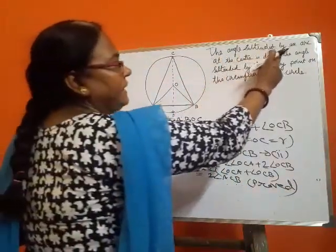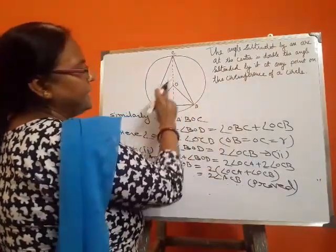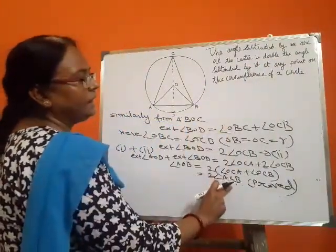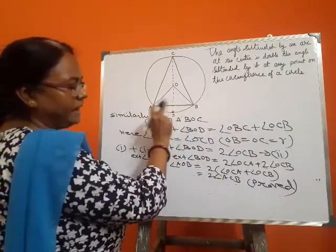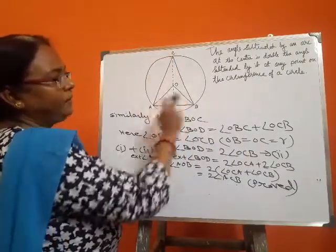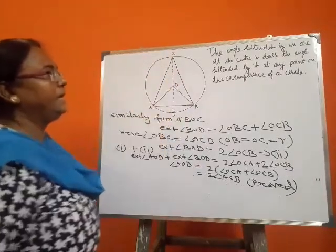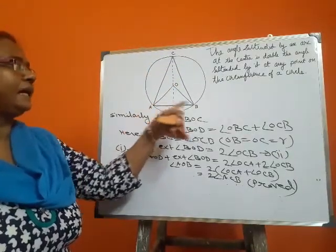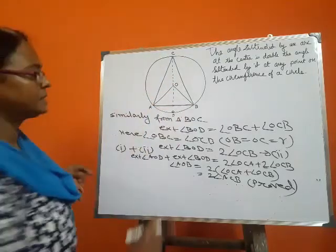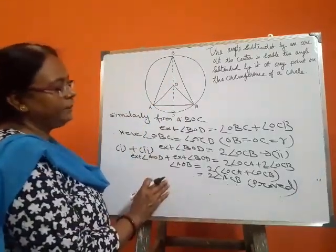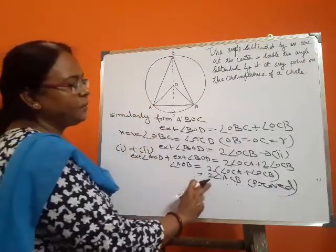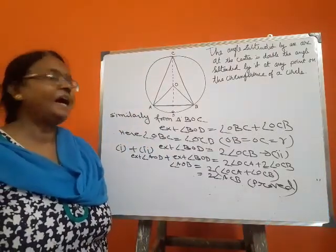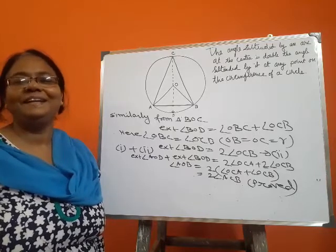So, we have proved the theorem: the angle subtended by an arc at the center, that is angle AOB, is double the angle subtended by it at any point on the circumference of a circle — at point C, the angle subtended by arc AB is angle ACB. Thus, angle AOB equals 2 times angle ACB. Thank you, students. I will see you in my next video.